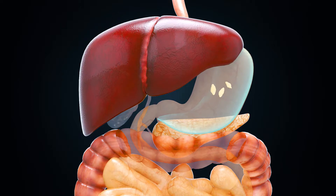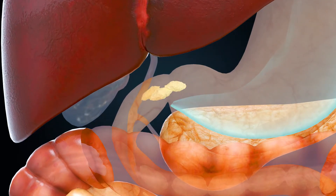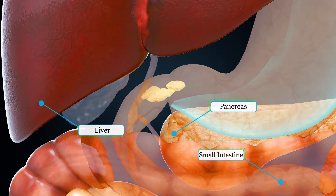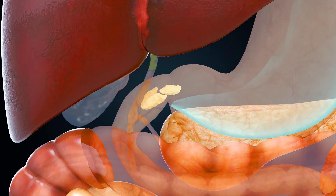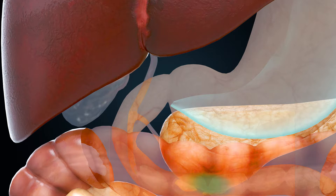The food then goes into a highly coiled tube called the small intestine. The small intestine receives secretions from the liver and pancreas. The liver secretes bile juice, while the pancreas secretes pancreatic juice. The wall of the small intestine also secretes juices which help in further digestion of food.